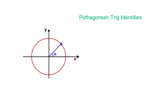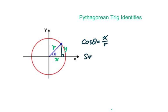Now let's go to Pythagorean trig identities. Let's look at this circle. We know that cosine θ equals x over r and sine θ equals y over r.